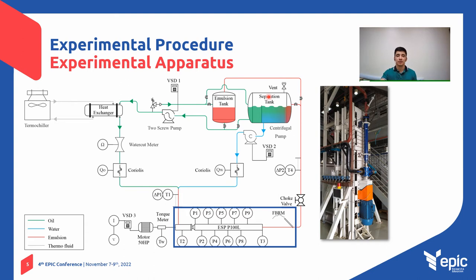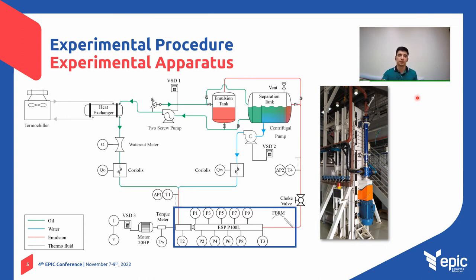The oil phase is drawn from the tank by two screw booster pumps and flows through a temperature control system composed of a shell-and-tube heat exchanger and a thermochiller. Temperature control is essential since the system operates in a closed loop and tends to heat up. In addition, the oil viscosity is adjusted through temperature control.